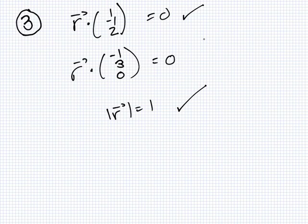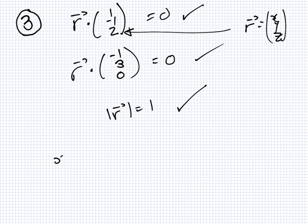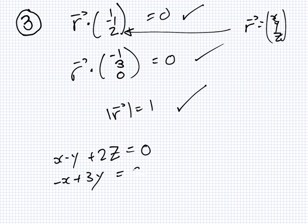Zero dot product means — right, so if r is x, y, z and I put that in here I get x minus y plus 2z equals 0, and here I'll get minus x plus 3y equals 0, and here I'll get x squared plus y squared plus z squared equals 1.